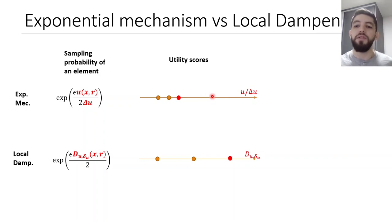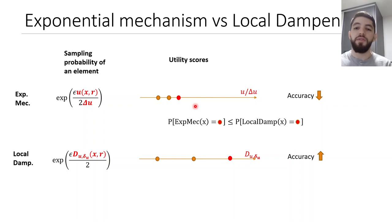Compared to the local sensitivity mechanism to the exponential mechanism, the difference is the red term in the probability. If we put some examples of this term on the axis, we have this. The distance from the best score, the red point, is further apart from the rest on the local dampening mechanism compared to the exponential mechanism. This means that the probability of sampling the best answer, the red dot, is higher in the local dampening mechanism. This implies higher accuracy.